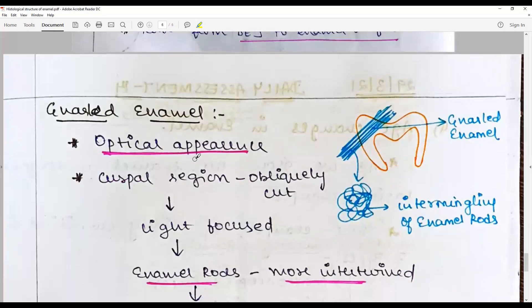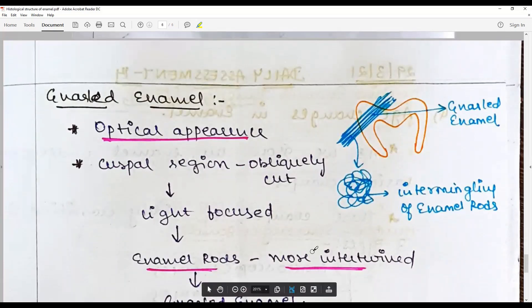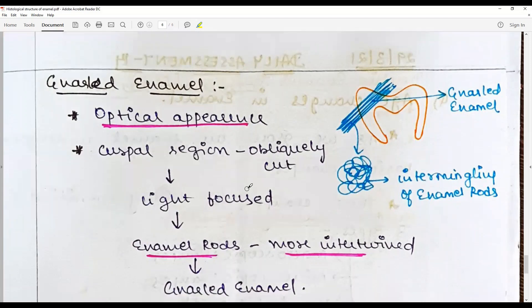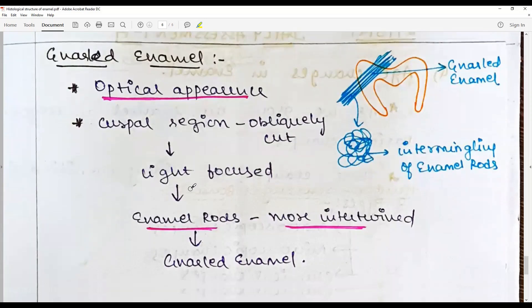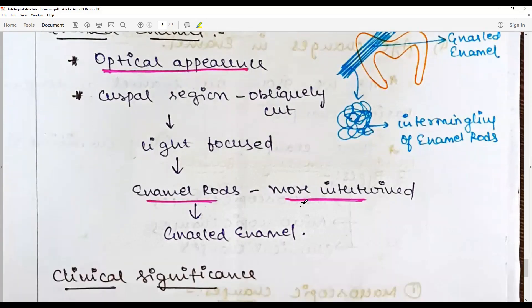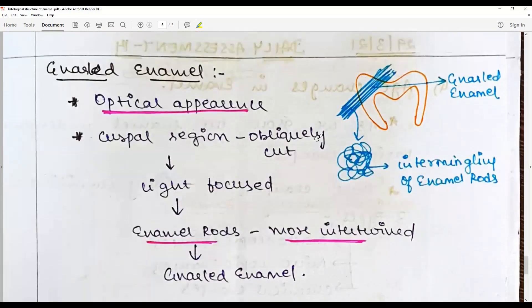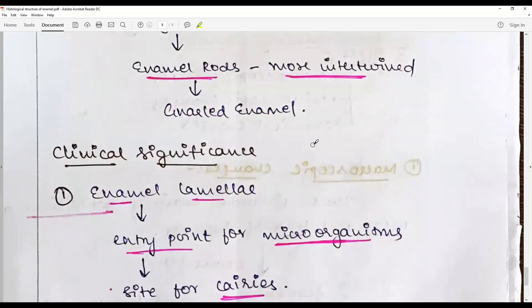Gnarled enamel is an optical illusion caused by the twisting and intertwining of enamel rods along the cusp. More enamel rods are twisted to occupy a less area, so that is giving an optical illusion of the enamel rods being squeezed, seen in the cuspal region. And when focused, this is a functional adaptation to withstand most of the stresses that is happening with the cuspal tips. Functional adaptation.